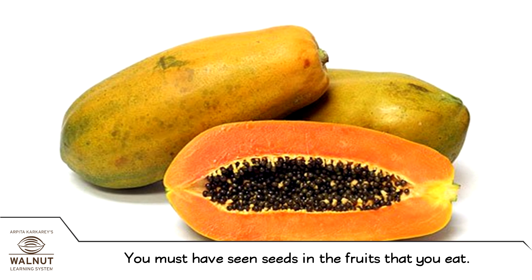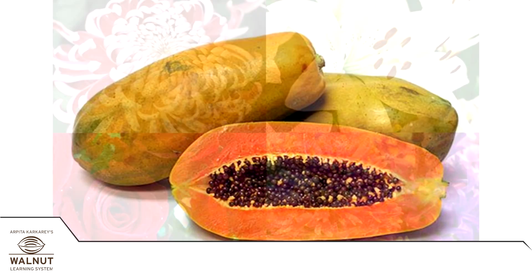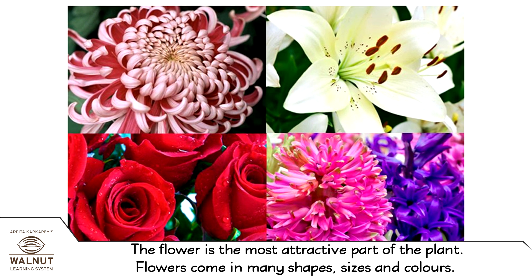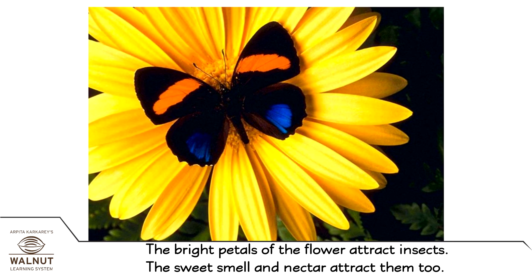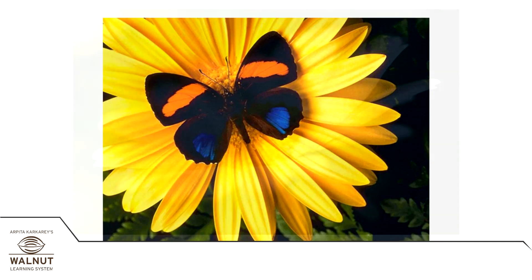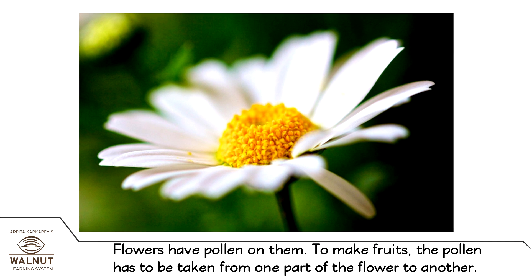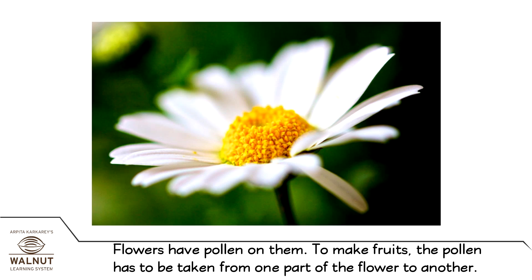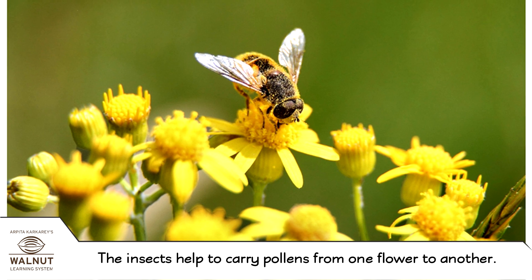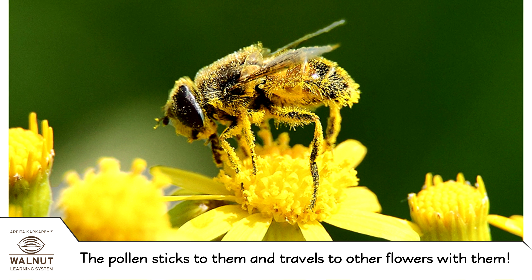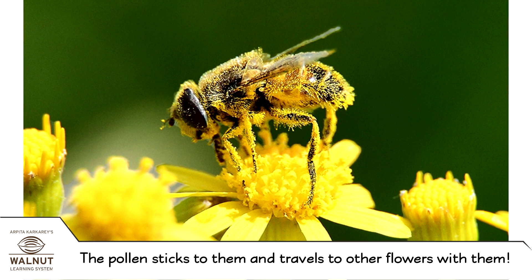You must have seen seeds in the fruits that you eat. The flower is the most attractive part of the plant. Flowers come in many shapes, sizes and colours. The brightest petals of the flower attract insects. The sweet smell and nectar attract them too. Flowers have pollen on them. To make fruits, the pollen has to be taken from one part of the flower to another. The insects help to carry pollen from one flower to another.